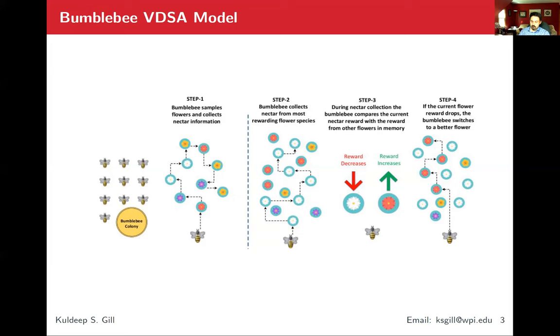If SNR drops, based on the memory, you can switch to a better channel. In step four, that's what they're saying. If the current flower reward drops, if the SNR for the channel degrades, you can switch to a better channel based on the memory.